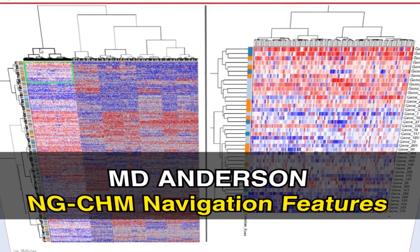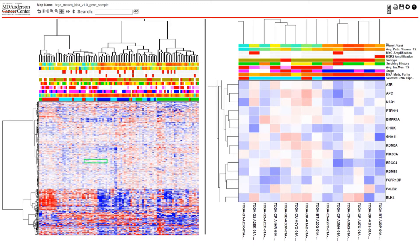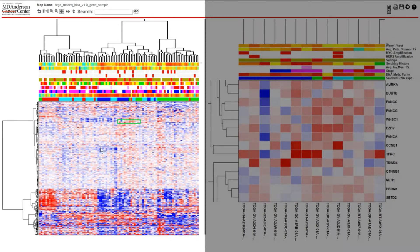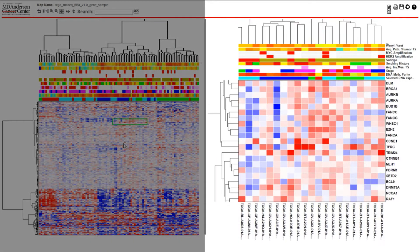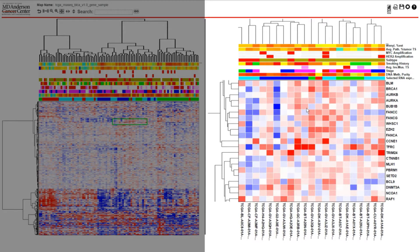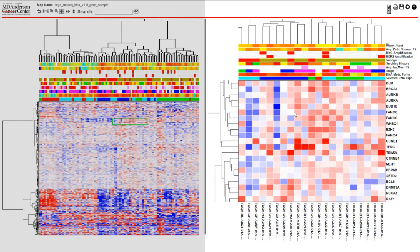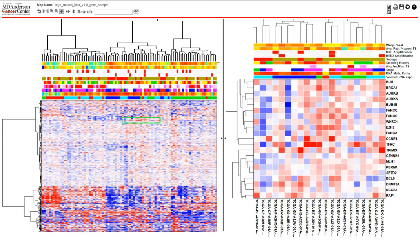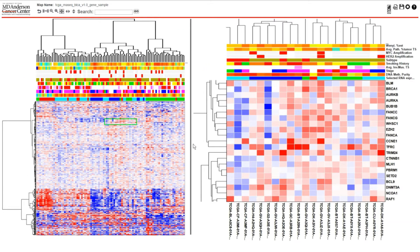The Viewer offers dynamic capabilities for exploring heat maps. There are two panels: a summary view on the left that shows the full map including dendrograms and covariate bars, and a detail panel on the right that shows a zoomed-in view of a portion of the heat map, including row and column labels. The center divider bar can be dragged left or right to change the relative size of each portion of the screen dedicated to each panel.